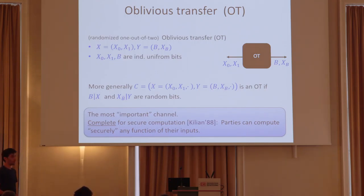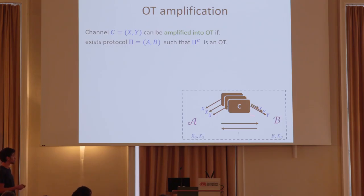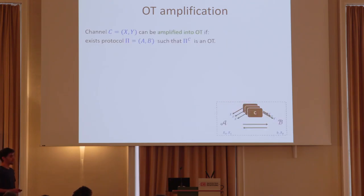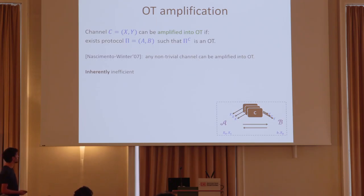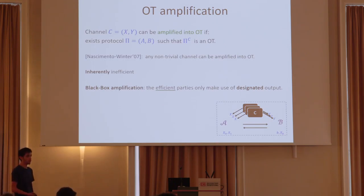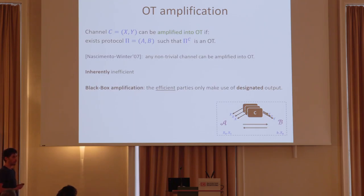We really want to understand which channels can be amplified into oblivious transfer. If Alice and Bob can communicate, initiate the channel, communicate, and then output bits that induce OT, we say the channel can be amplified into oblivious transfer. Information theoretically, we know that any non-trivial channel — any channel that cannot be implemented using a trivial protocol — can be amplified into OT. But this transformation is inefficient and not black-box. Alice and Bob need to use all of X and all of Y to construct oblivious transfer. We want black-box amplification, so we need to work harder.